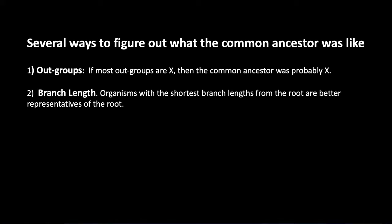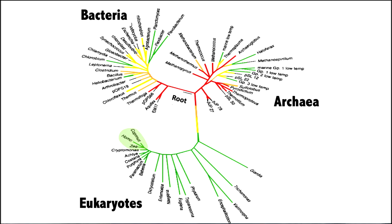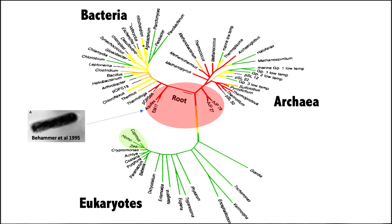Organisms with the shortest branch lengths from the root are better representatives of the root. Here's a tree of life, with the root right in the middle. The things with the shortest branch lengths are here — you can see how short the branch lengths are from the twig to the root, as opposed to longer ones further away. If we look at Aquifex, because of its short branch length, it's in many ways a better representative of the root than, say, a human being or a corn plant.